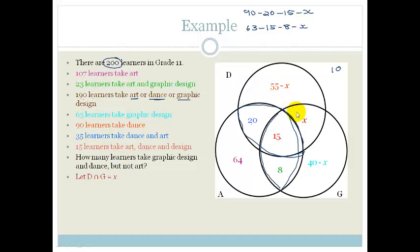Now, let's just see before we need to see if we can have to solve for X. It says how many learners take graphic design and dance, but not art? So we do need to find out what is X. So how are we going to do this? We know that all of these numbers have to add up to 190. So that's all that we're going to do.